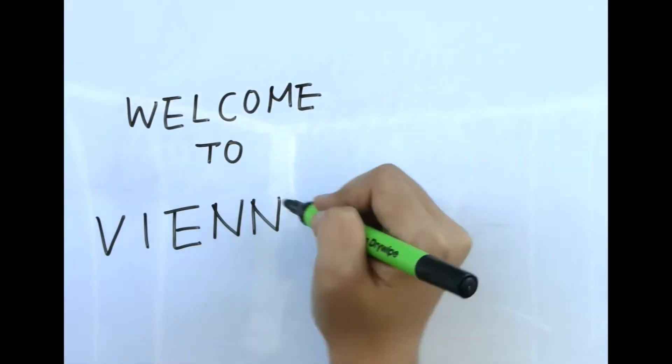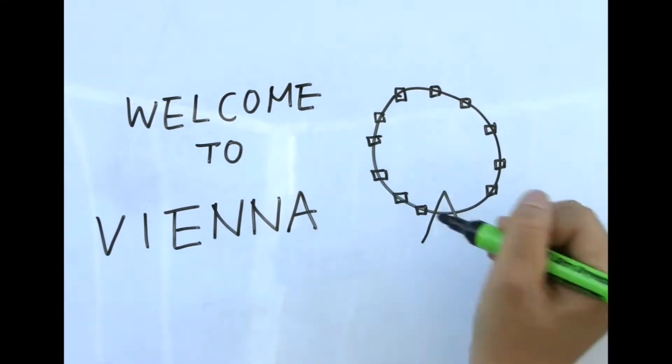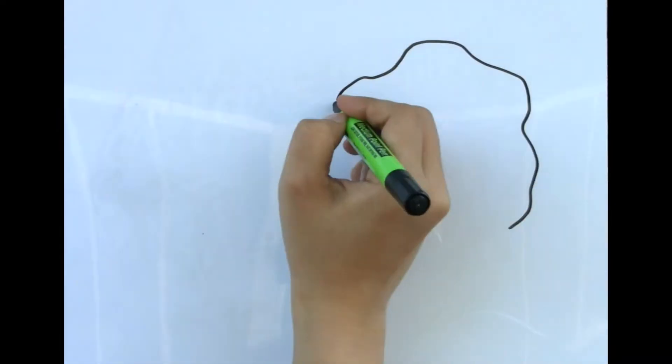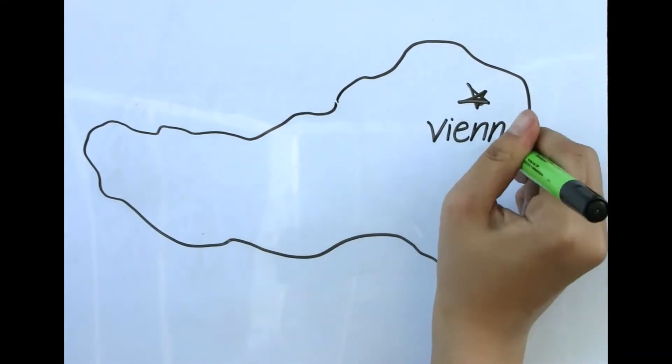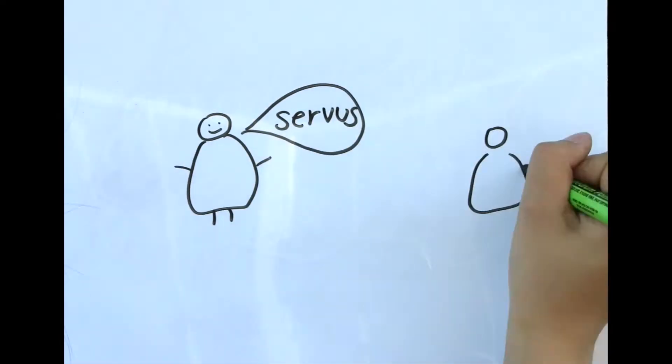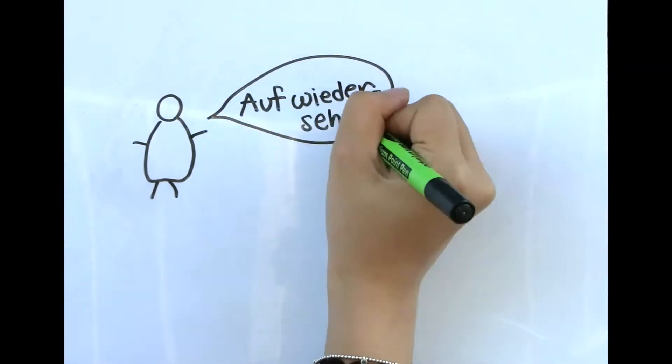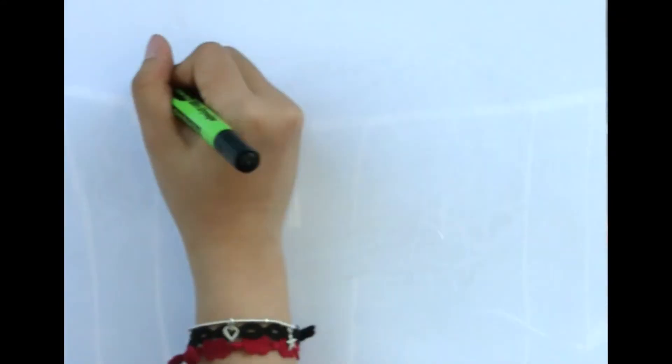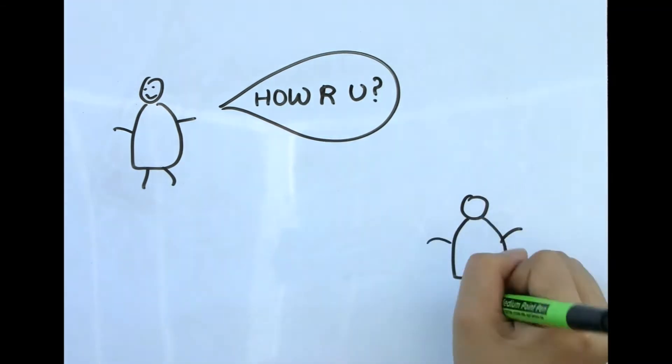Vienna is an amazing city with so much culture and history combined with the modern feel of a big city. Vienna is the capital of Austria, which is in Central Europe. The official language here is German. To help you, Servus is hello and Auf Wiedersehen is goodbye, but many people speak English.